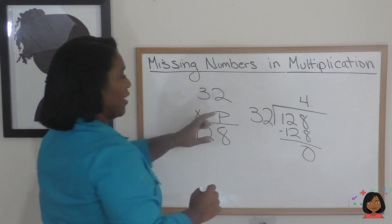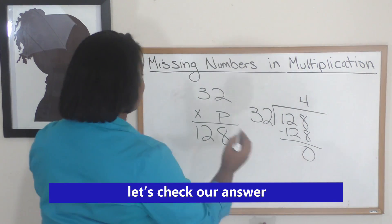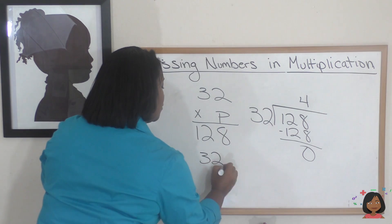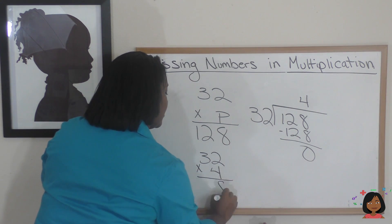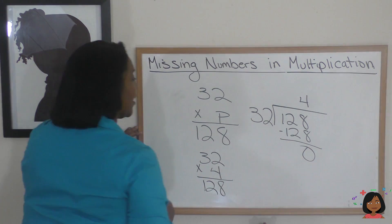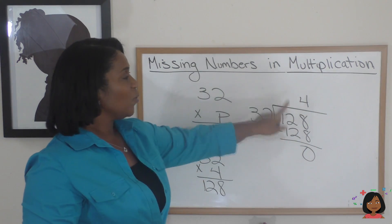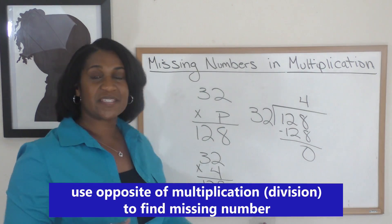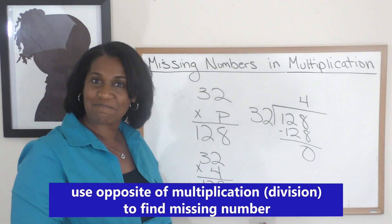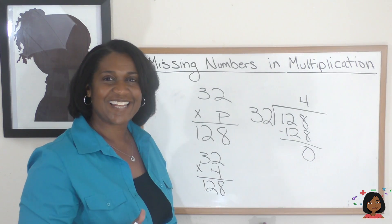That looks like 4. 4 times 2 is 8, 4 times 3 is 12 — our answer is 4. But let's check it to be sure: 32 times 4 is 128. There you go — that's how we can use division to figure out missing numbers in multiplication. Pretty simple! See you next time.